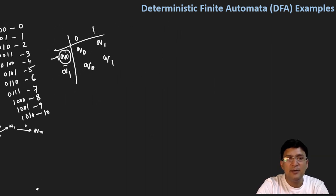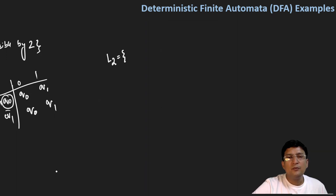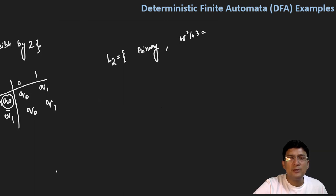इस concept को थोड़ा और extend करते हैं। इस transition table को हम utilize करेंगे। अब हमें ऐसी language के लिए automata बनाना है जिसमें binary string w को consider किया जाए, और w mod 3 equals to 0 हो। यानी binary number divisible by 3.